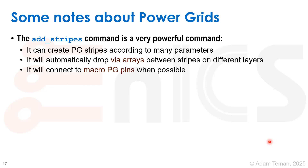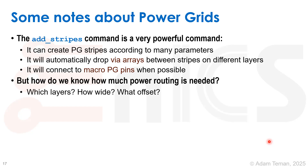Here are some notes about power grids. The add_stripes command is very powerful - it can create PG stripes according to many parameters, it'll automatically drop via arrays between stripes on different layers, and it will connect to macro PG pins when possible. It's a really useful command that does a lot of things. But how do we know how much power routing is needed, which layers to use, how wide to make them, and what offsets to use between them?